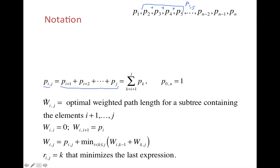Wij is basically the optimal weighted path length for a subtree that contains these elements exactly. We decide here are the elements we want to organize in one subtree, and now how are we going to do it in the best way?